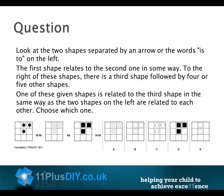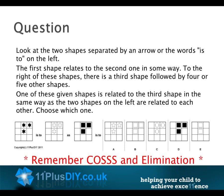For each question, look at the two shapes separated by an arrow or the words 'is to' on the left. The first shape relates to the second one in some way. To the right there is a third shape followed by four or five other shapes. One of these is related to the third shape in the same way as the two shapes on the left are related to each other. Choose which one. Remember COS and elimination.